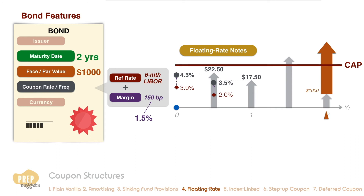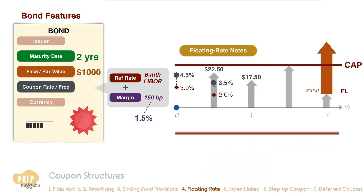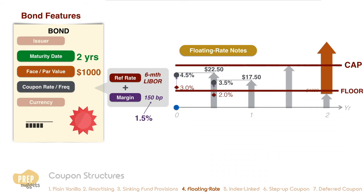If the coupon rate rises higher than the cap, the cap rate is applied instead. Often, floating rate notes with caps also have a floor, which benefits the bondholder by placing a minimum on the coupon rate. Regardless of how low the reference rate falls, the floor rate is applied to protect the bondholder.